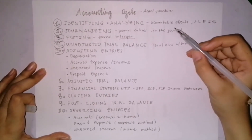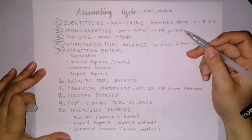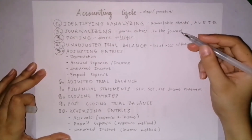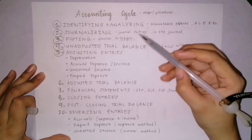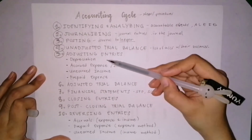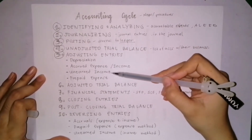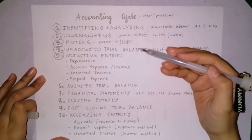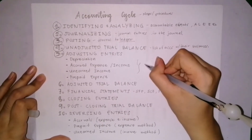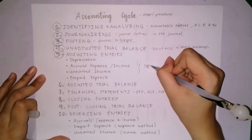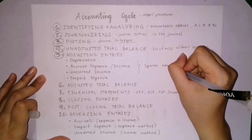You record income when you earn it, and you record expense when you incur it. There are four types of adjusting entries: depreciation, accrued expense or income, unearned income, and prepaid expense. We will have a separate video about adjusting entries since it is a lengthy discussion.